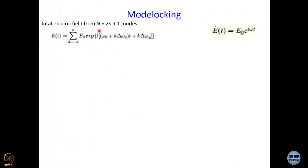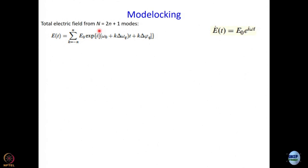I'm working with an odd number of modes because the math becomes a little easier. If it is an even number of modes, you can conveniently neglect one, because remember how many modes we are going to have — 5,000, 6,000, 10,000, 20,000, something like that. So it doesn't matter whether it is 20,532 or 20,531. We formulate using 2n + 1 number of modes.